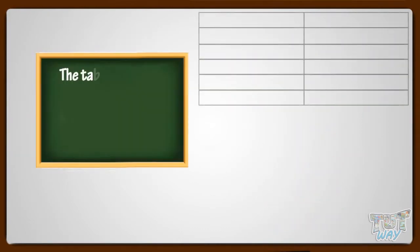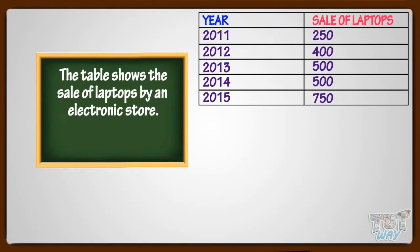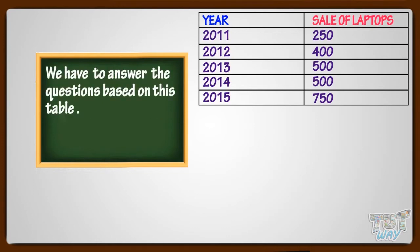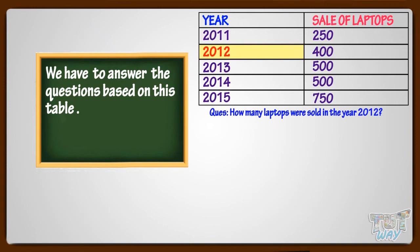Now let's move on to another example. An electronics store in the city recorded its sale of laptops for the past five years. We have to answer questions based on this table. How many laptops were sold in the year 2012? We can see from the table that 400 laptops were sold in the year 2012.